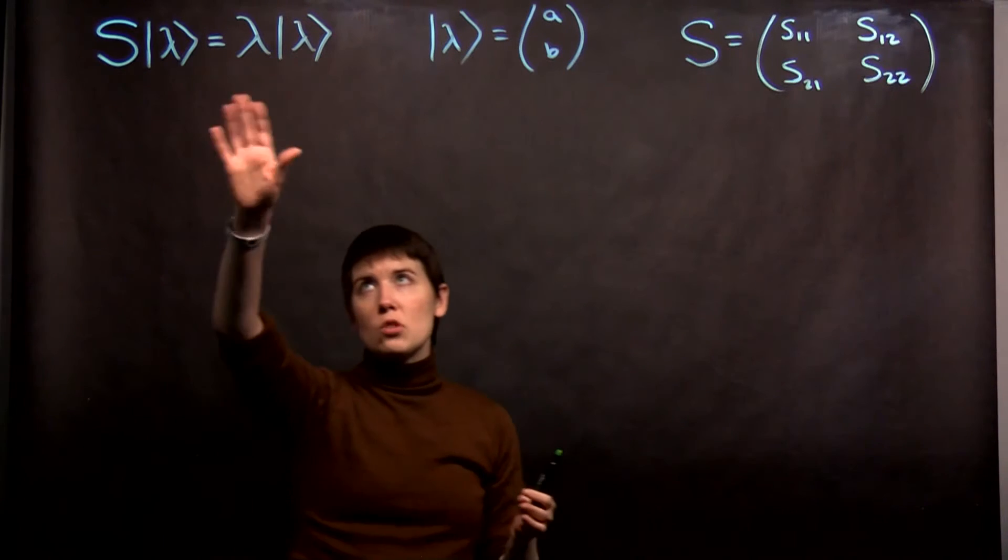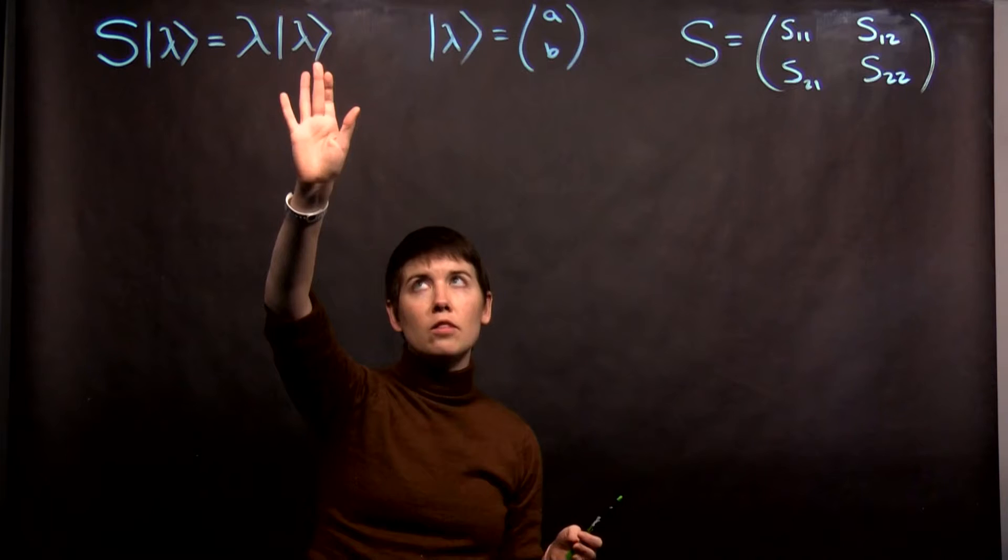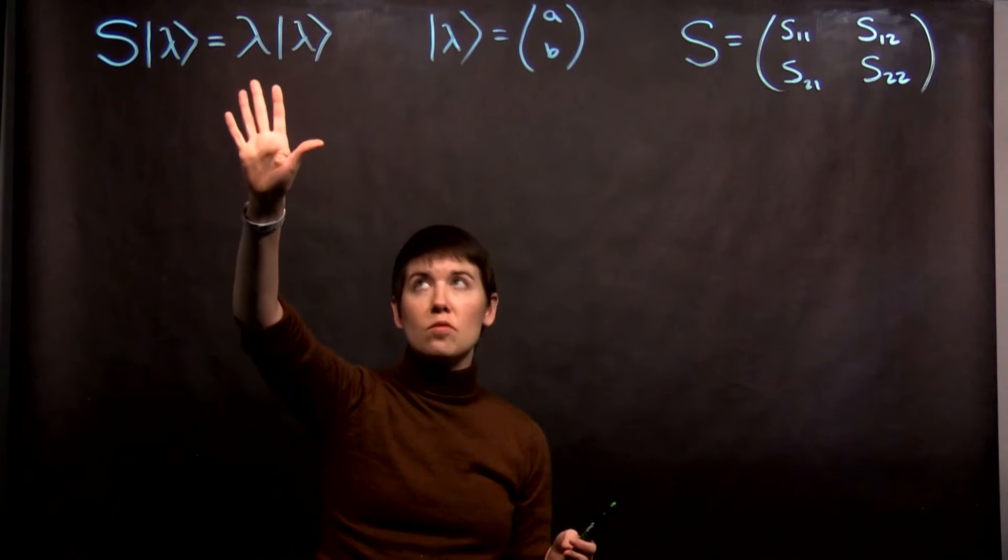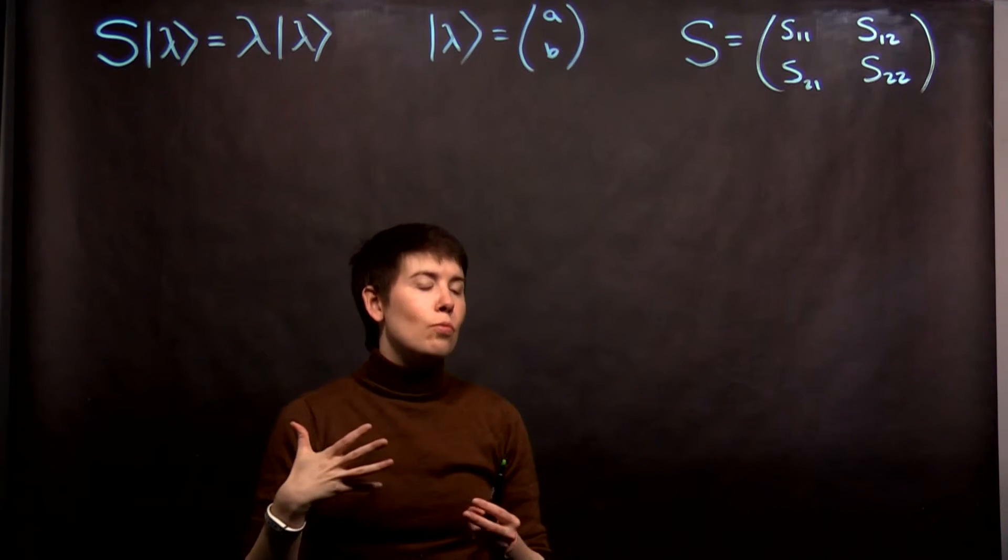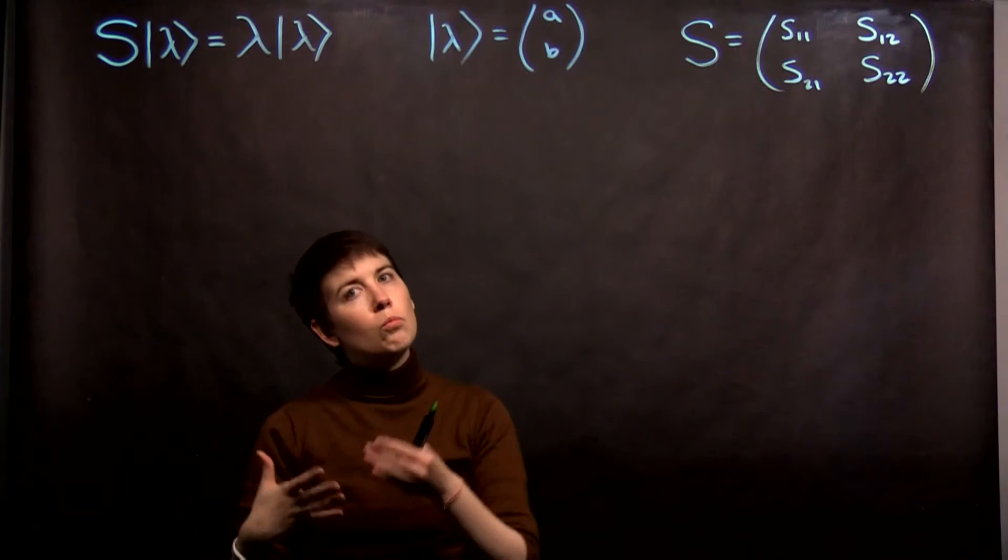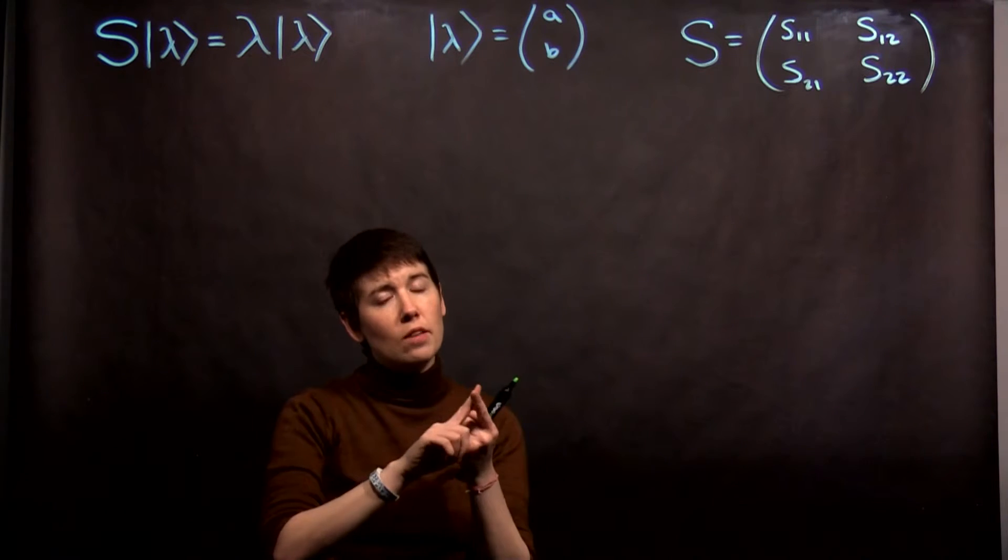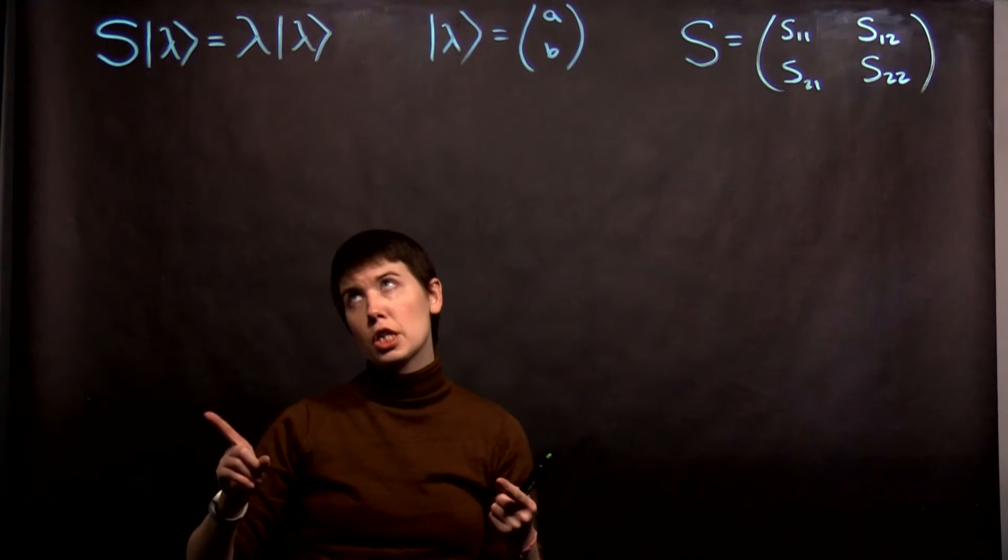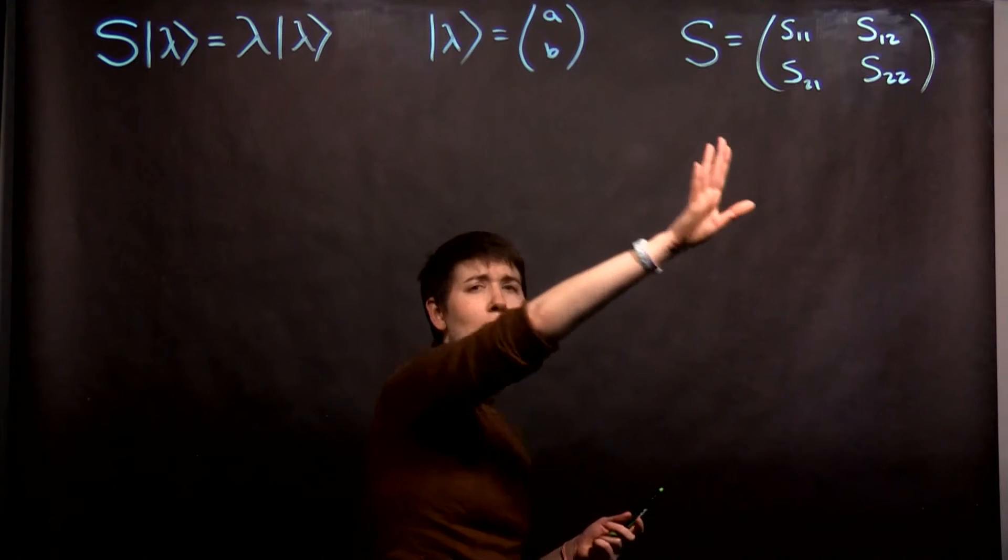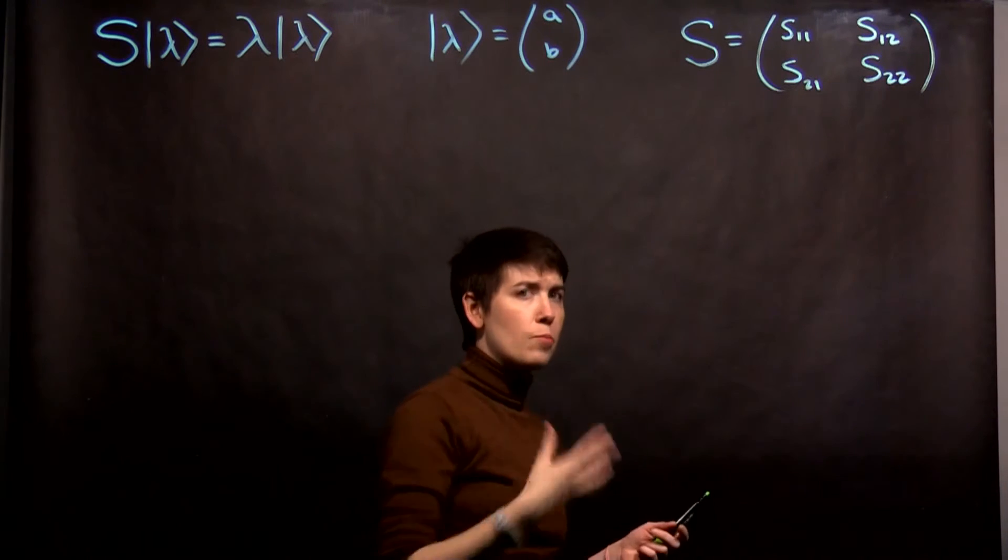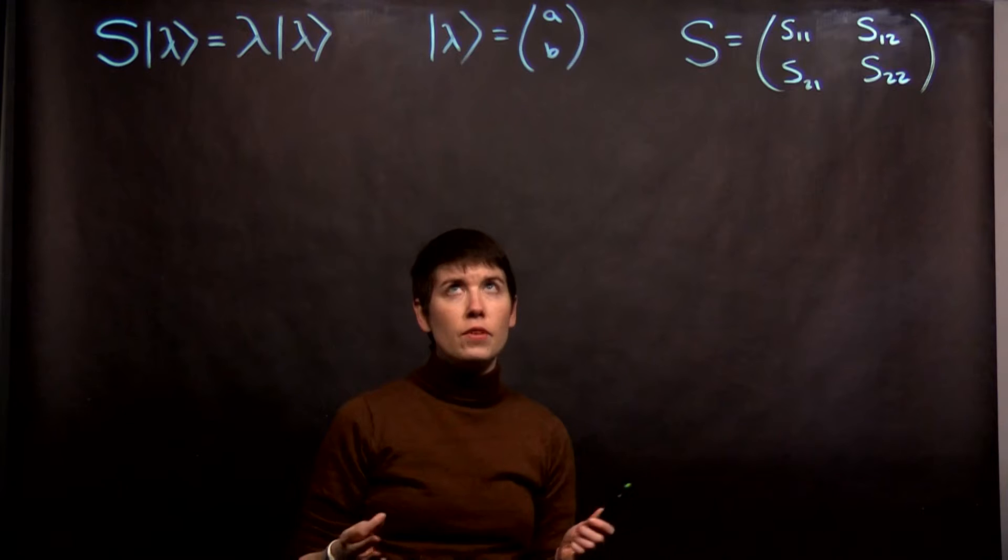Now we're going to actually be using this notation where we label the eigenvector with the eigenvalue. There's this idea that we're going to have more than one eigenvalue, and each eigenvalue has a corresponding eigenvector. Because this is a two-by-two matrix, you expect it to have two eigenvalues.